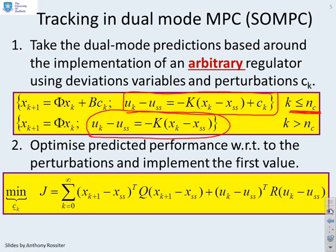And then what you do is you substitute these predictions into your typical infinite horizon performance index. But again, you'll notice a key point. In all of these, it's assumed that you know the implied steady state values of the states and the inputs.